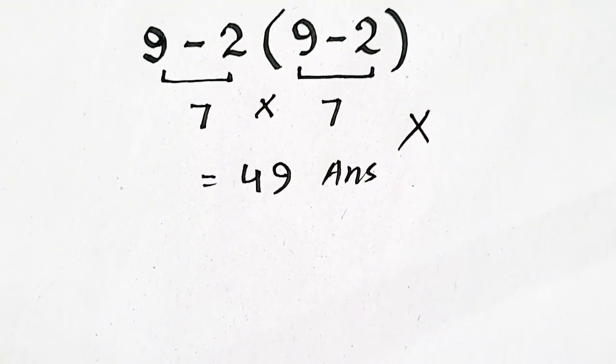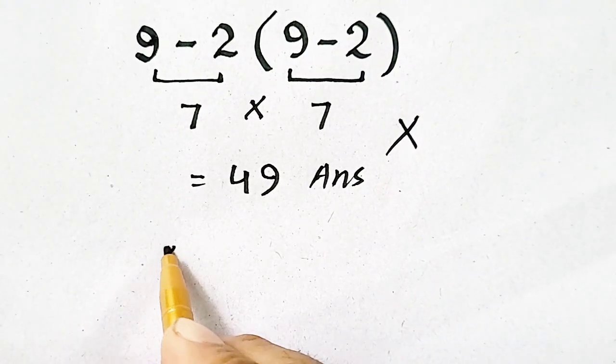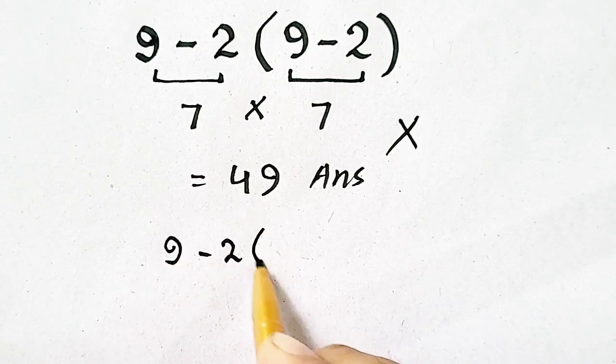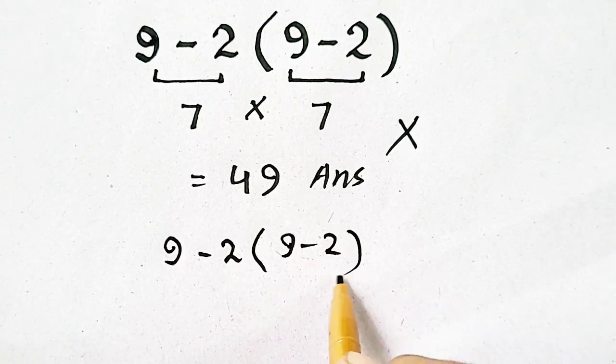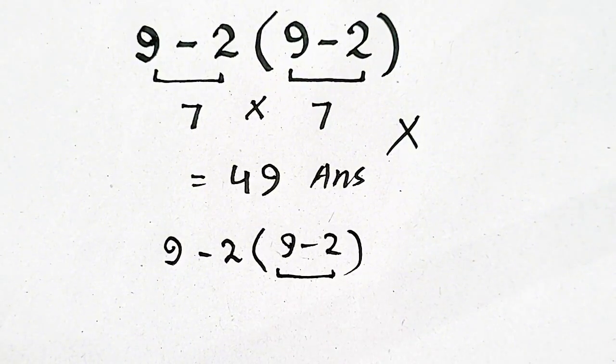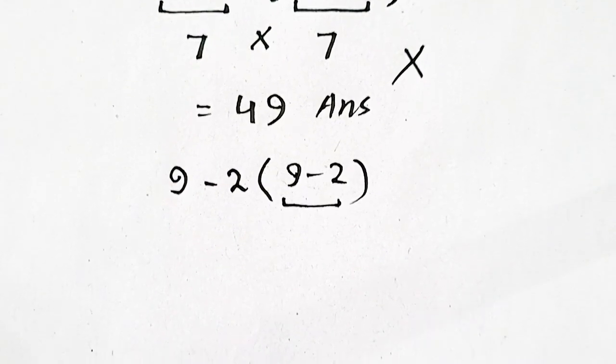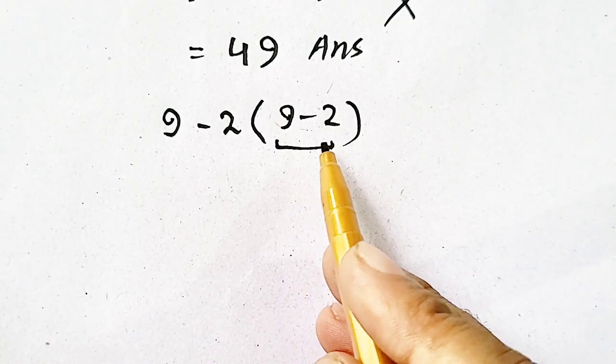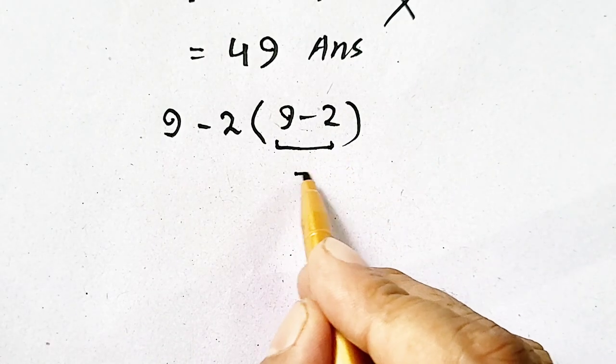Now, we will solve the same question by obeying order of operation. First of all, we have to solve parentheses according to PEMDAS rule, or BODMAS rule. So, 9 minus 2 will be equal to 7.